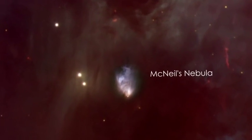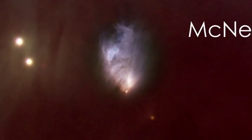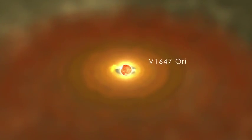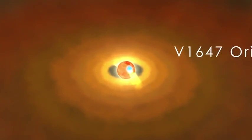Astronomers first noticed McNeil's Nebula in 2003, which drew their attention to the young star illuminating it, named V1647 Orionis.